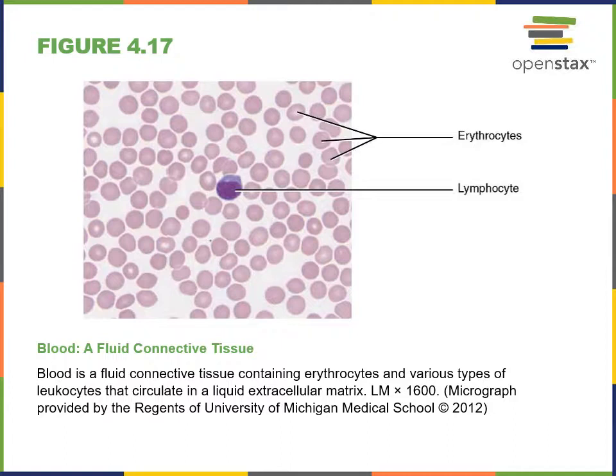The primary function of blood is to transport materials throughout the body — for example, transporting oxygen from the lungs to cells throughout the body or transporting waste away from cells. Blood is found within the blood vessels and heart throughout the cardiovascular system.